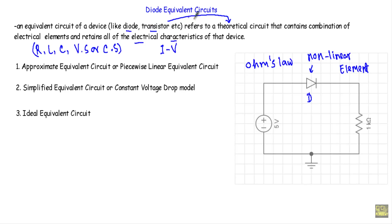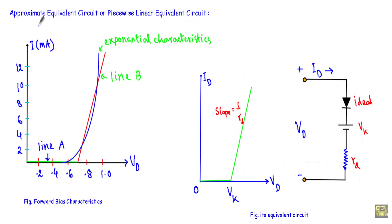That theoretical circuit will be the equivalent circuit of that diode or transistor as it will not change the characteristics of the circuit. Once the device is replaced by its equivalent circuit, the resulting network can be solved by traditional circuit analysis methods. Usually the diode equivalent circuits are classified into three types: first, approximate equivalent circuit or piecewise linear equivalent circuit; second, simplified equivalent circuit or constant voltage drop model; and third, ideal equivalent circuit.